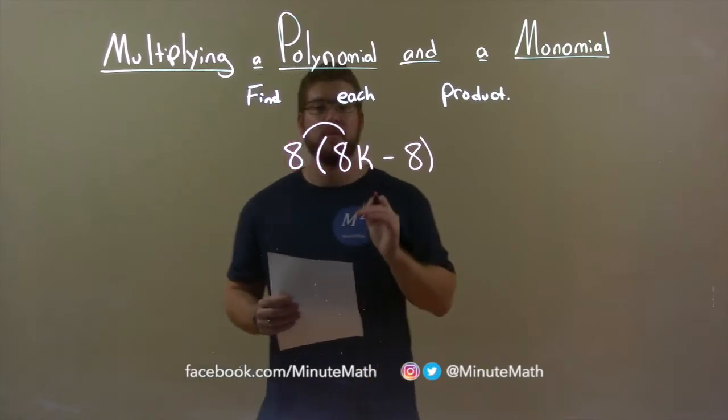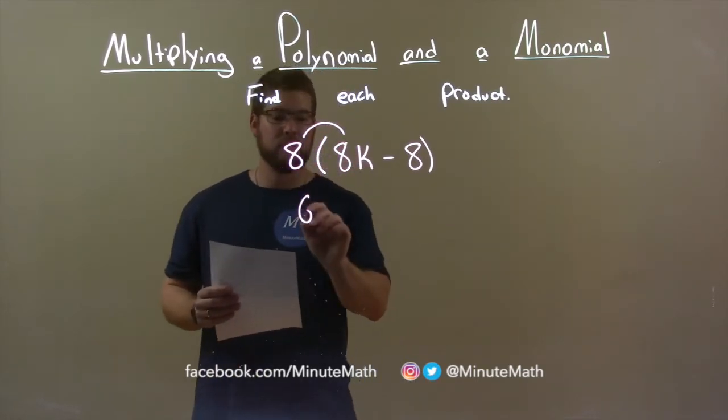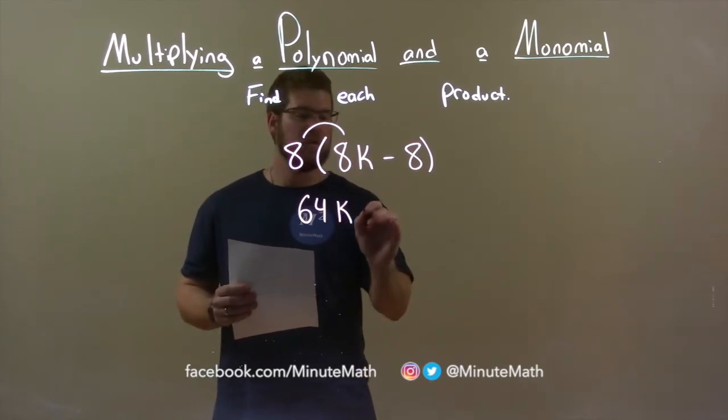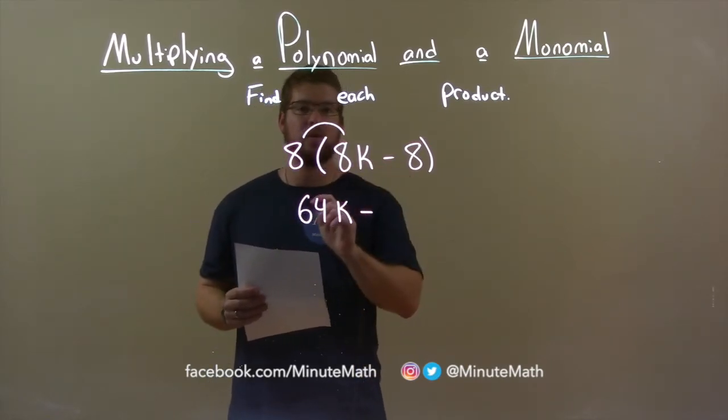8 times 8k, well 8 times 8 is 64 and then there's just the k left over. There's a subtraction sign separating these two terms.